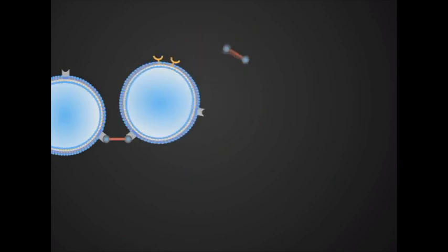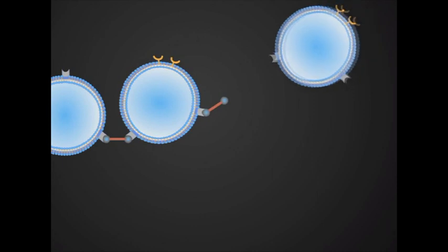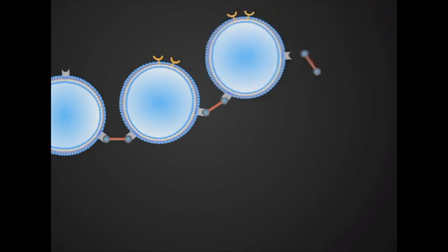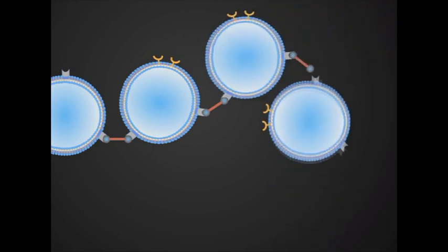Fibrinogen simultaneously binds to the glycoprotein receptors on two separate platelets, resulting in platelet aggregation.